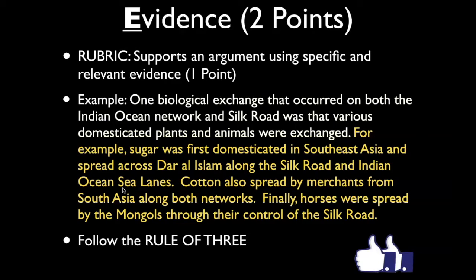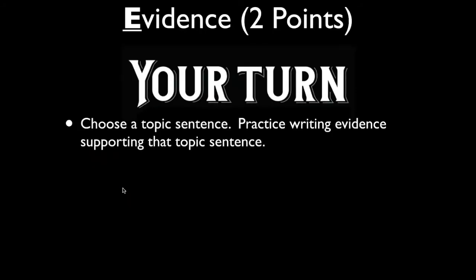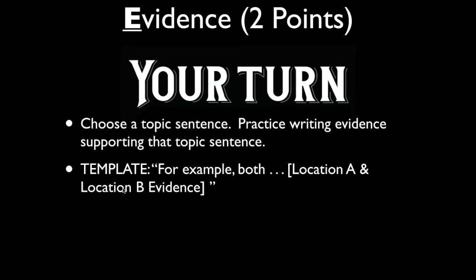I encourage you to follow the rule of three — it's good for argumentative essay writing. If you can use three pieces of evidence or examples, especially from a variety of different places, that can be really powerful backing for your historical claims. Now it's your turn. Choose the topic sentence you wrote and practice writing evidence supporting it. Use 'for example' to force yourself to write evidence, and for comparative statements you might write 'both [Silk Road] and [Indian Ocean network]...'